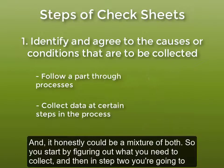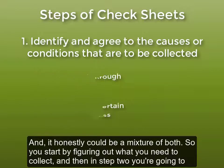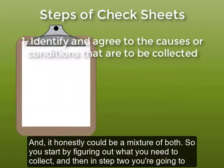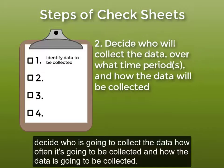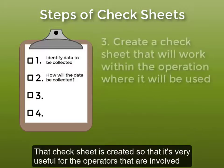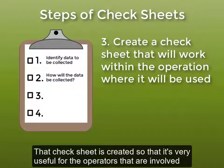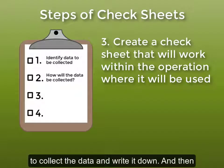You start by figuring out what you need to collect, and then in step two you're going to decide who's going to collect the data, how often it's going to be collected, and how the data is going to be collected. Then that check sheet is created so that it's very useful for the operators that are involved to collect that data and write it down.